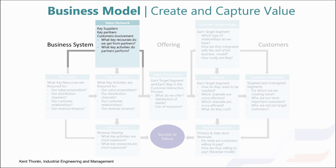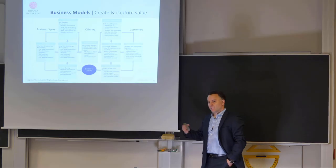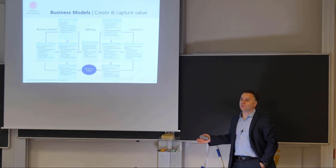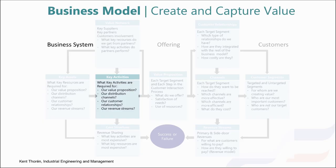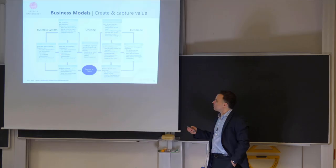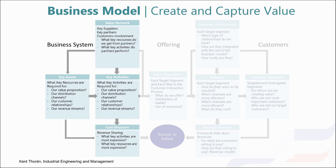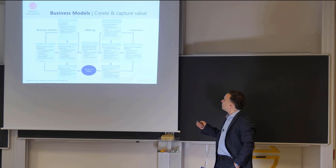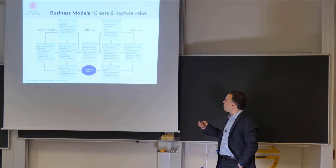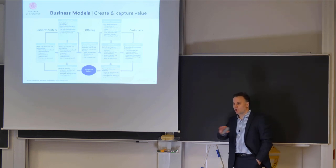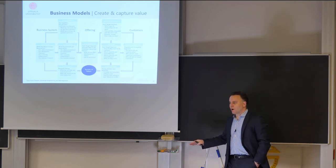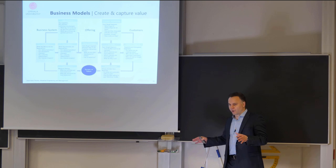We have the value network — that's the actors, key suppliers, key partners, and could be customers that are involved in creating value. A typical example is IKEA furniture: customers also do a bit of the work. The key activities are required to deliver the value proposition, but we also have customer channels and activities to manage customer relationships, revenue streams, revenue model, and assets — all of which lead to cost. On the other side we have the value proposition and a customer segment: who are we creating value for, who are our most important customers, and importantly, who are not our customers — otherwise you might be broadening your function set a little too much.